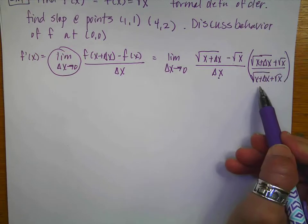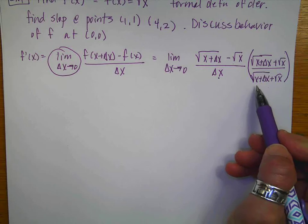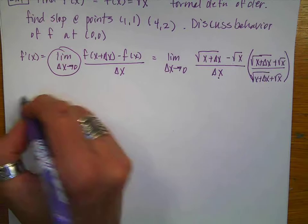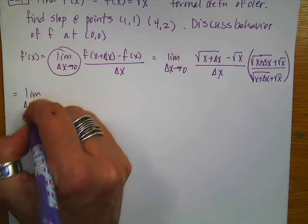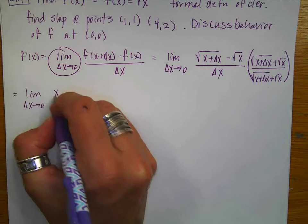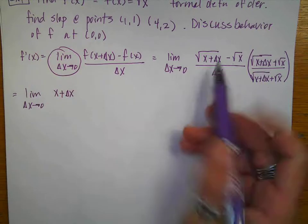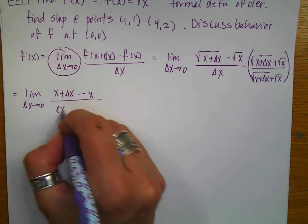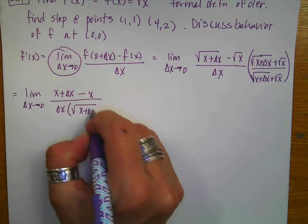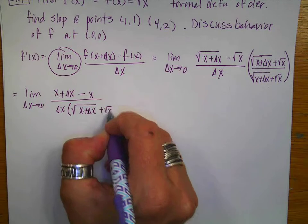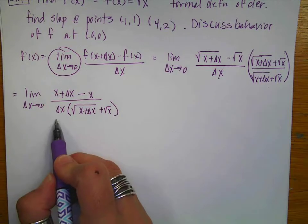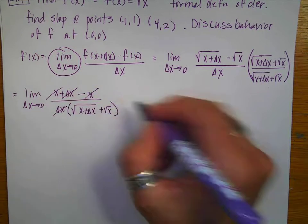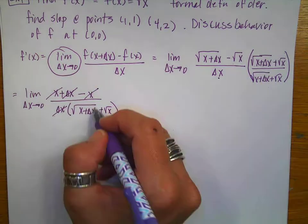Remember that this equals 1 — it doesn't change the value of the equation, but it helps me manipulate the math. The numerator is a difference of two squares, so this becomes the limit as delta x goes to 0 of x plus delta x minus x over delta x times the square root of x plus delta x plus the square root of x. I do not distribute on the bottom because that just complicates things. Notice that the x's cancel and the delta x's cancel, so now I can do my direct substitution.